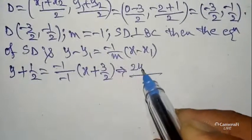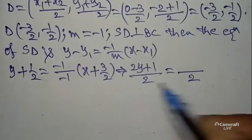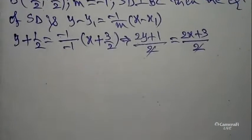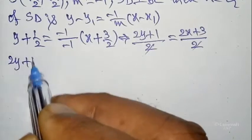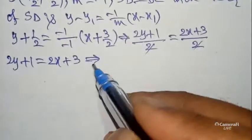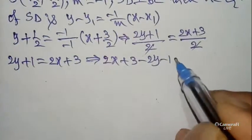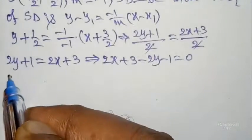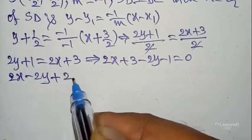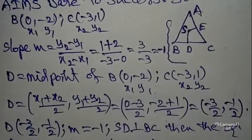Taking LCM 2 and cross-multiplying: 2y + 1 = 2x + 3. Rearranging, bringing all terms to one side: 2x - 2y + 2 = 0. This is Equation 1.